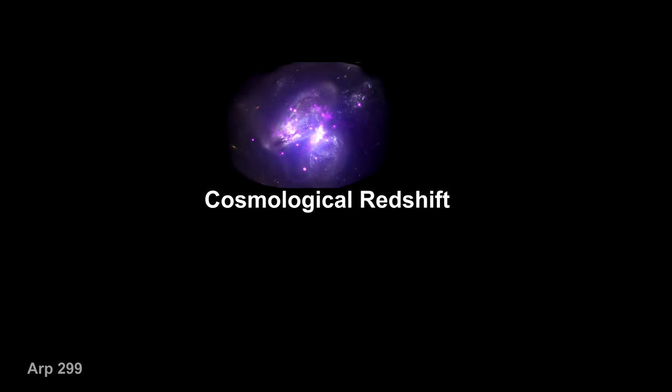When we observe light from distant galaxies, we are seeing the light from the stars in those galaxies, and that light has absorption lines.